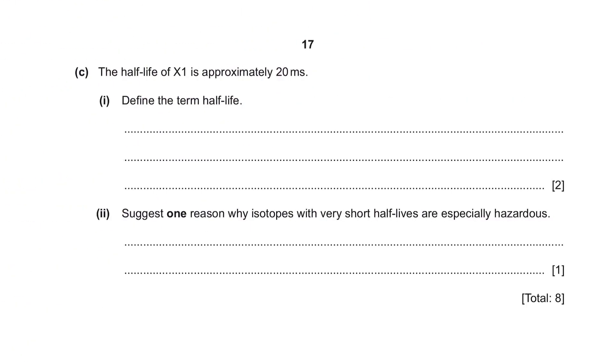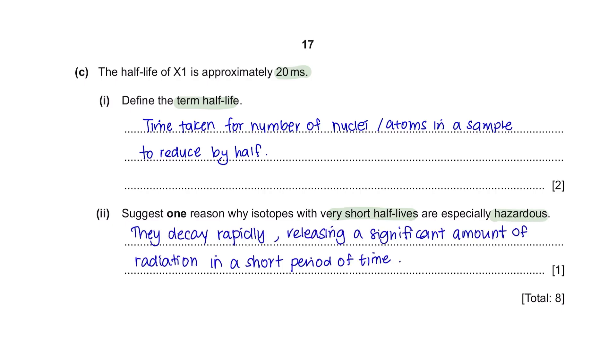Question C. The half-life of x1 is approximately 20 milliseconds. Part 1: Define the term half-life. This is a definition question so make sure you remember how to define this term. Half-life is the time taken for number of radioactive nuclei to become half. Part 2: Suggest one reason why isotopes with very short life are especially hazardous. This is because they decay rapidly which releases a significant amount of radiation in a very short period of time.